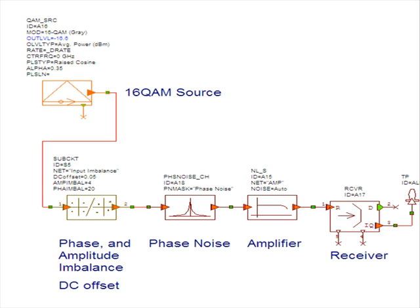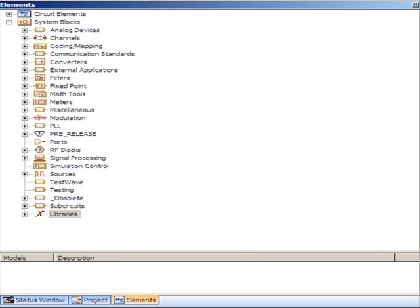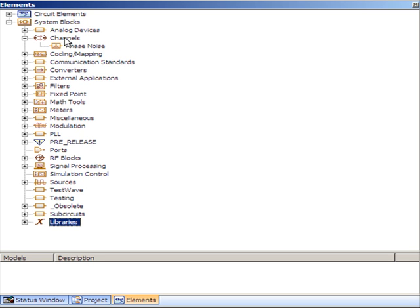You can find the models that are used in the system diagram in the elements browser under system blocks. Expanding the channels node and going into the sub node phase noise, you'll find the phase noise channel model.